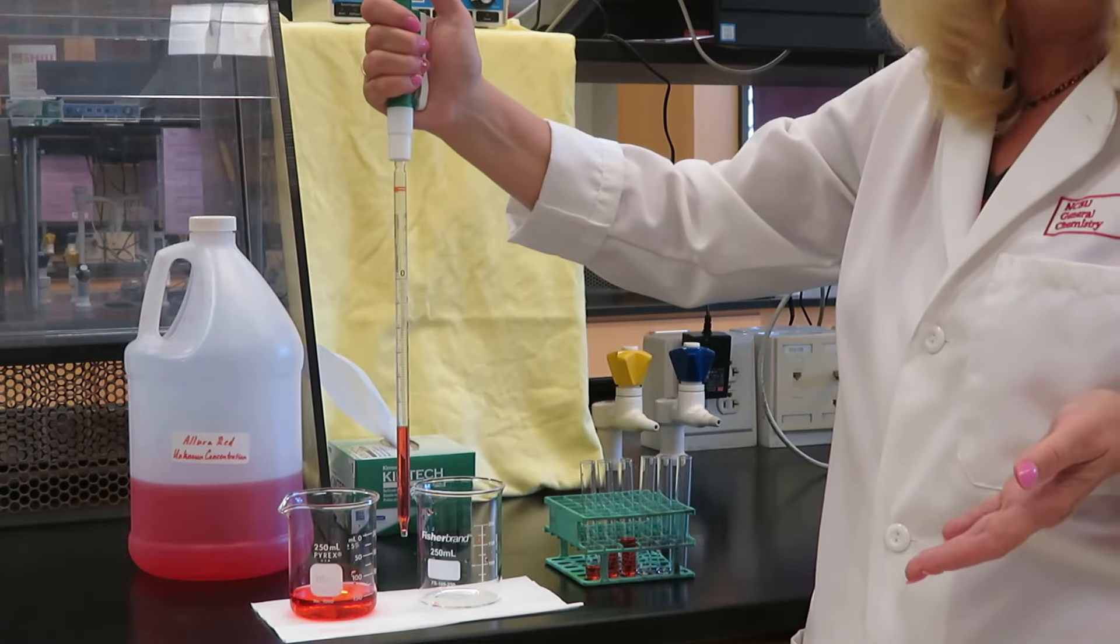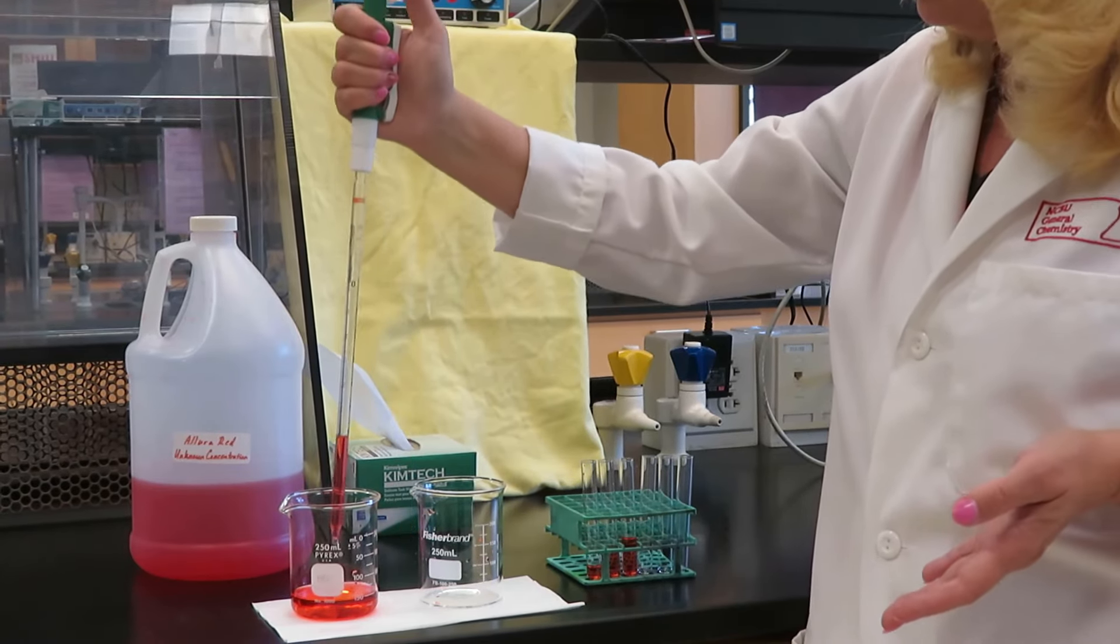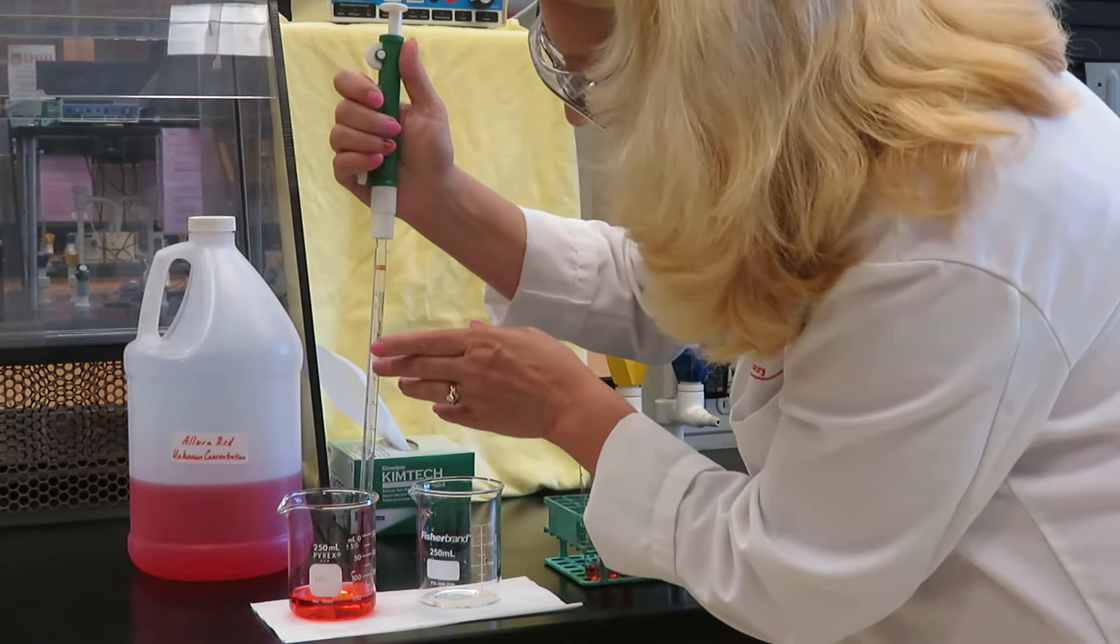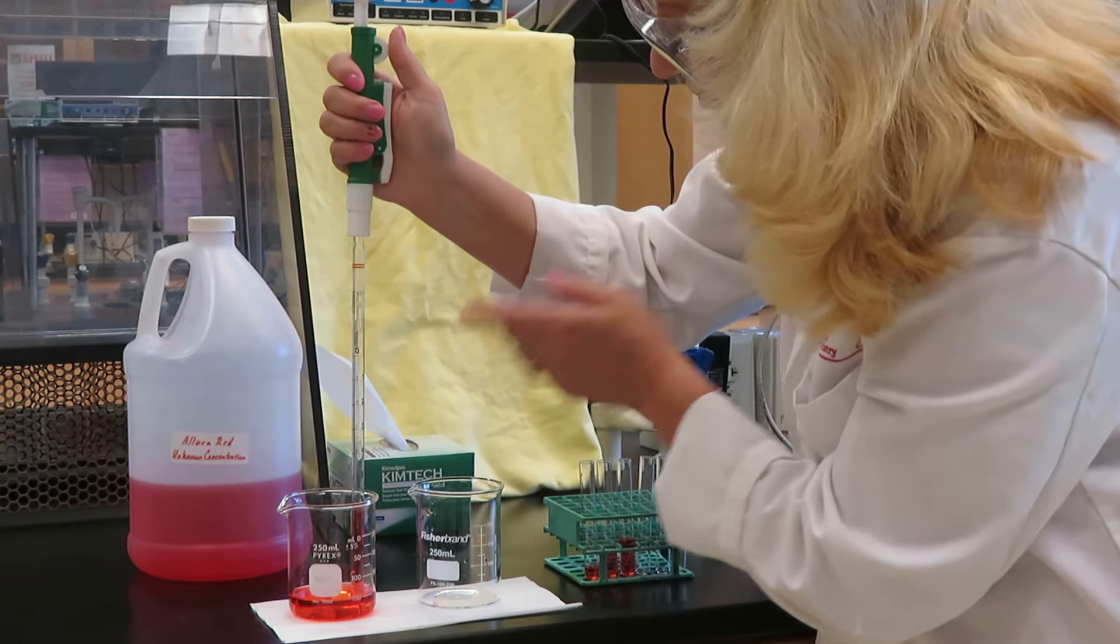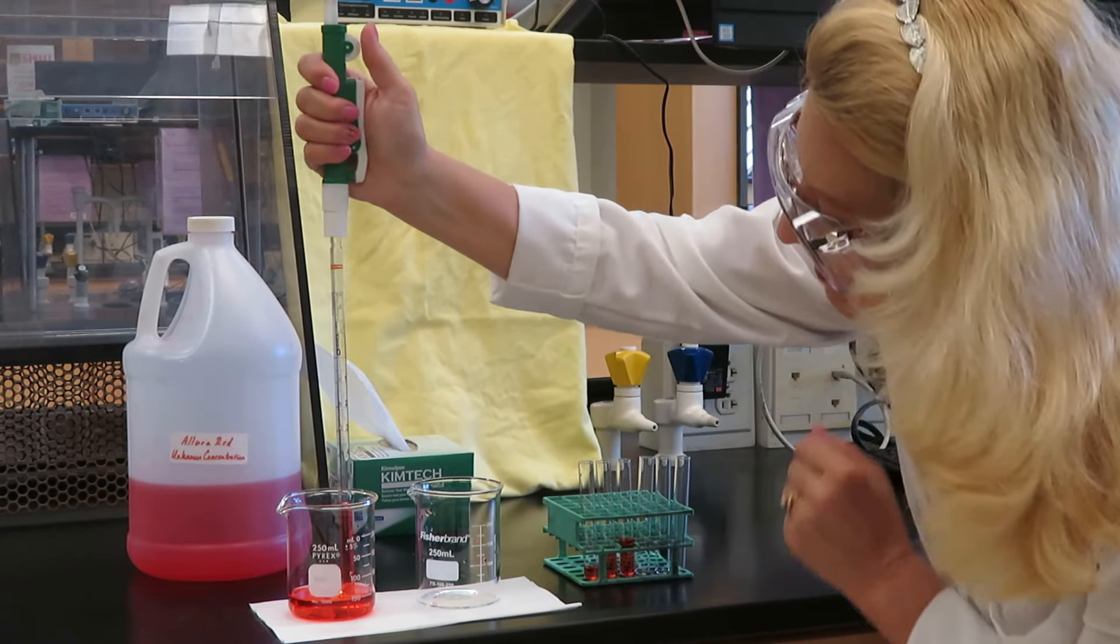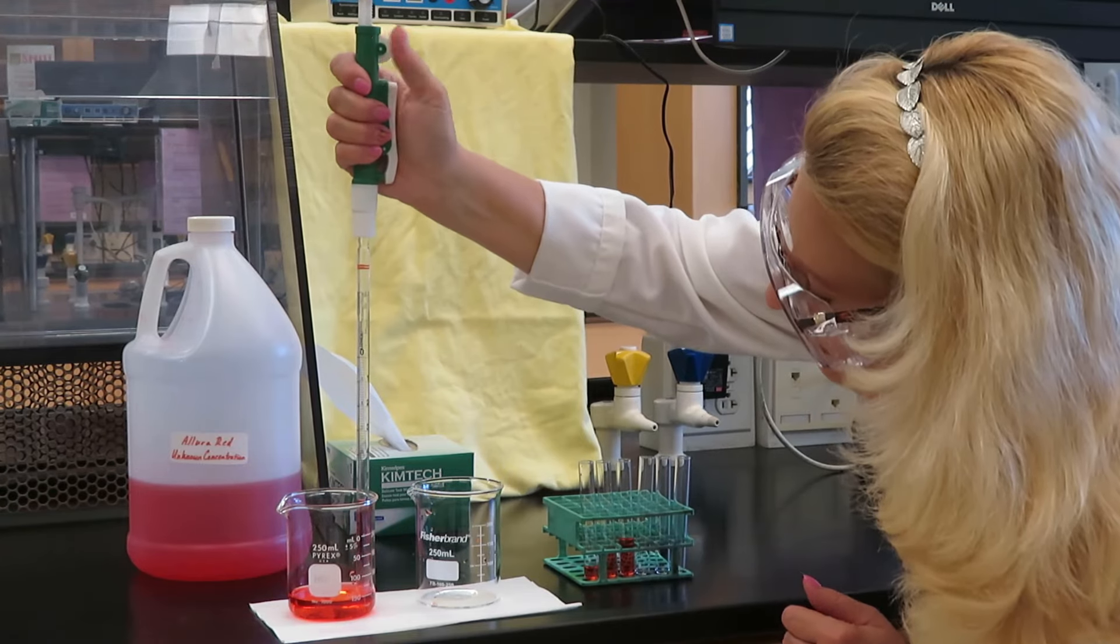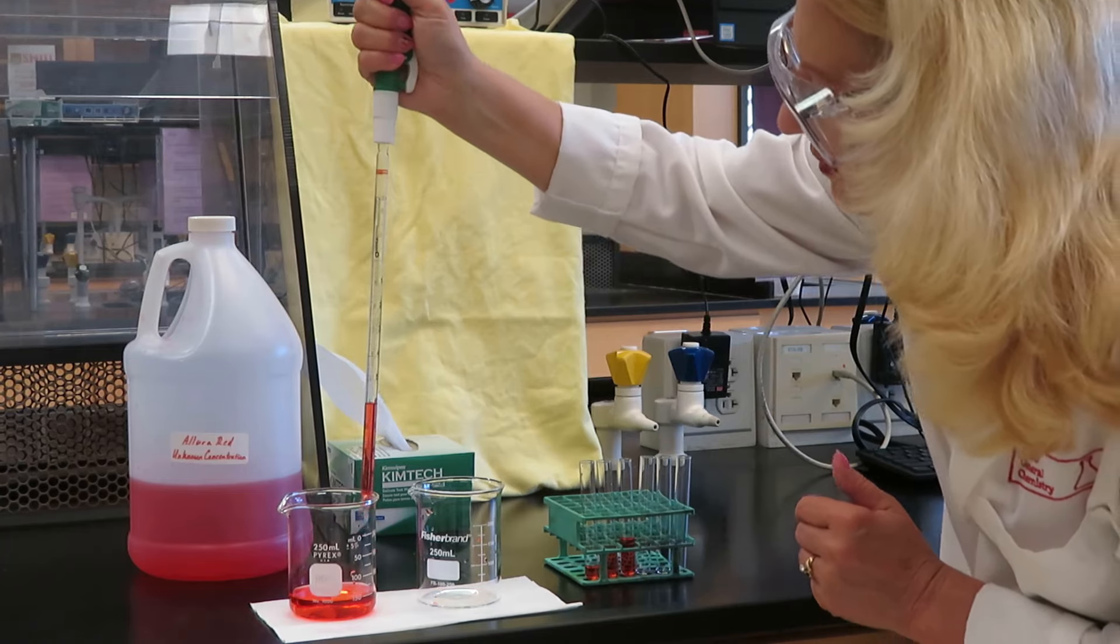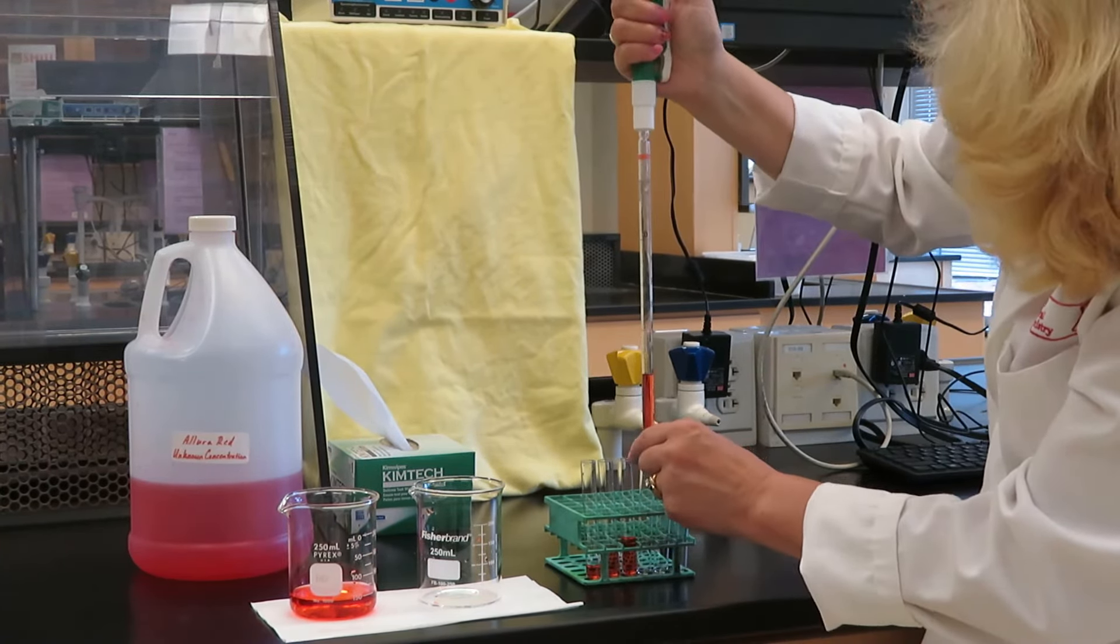Now, let's say in the last test tube, I want 4 milliliters. I'm going to do this one using the graduation on the side, which goes directly at 4 milliliters. So, I'm going to roll downward to draw up my liquid to make sure I am precisely at 4 milliliters at the bottom of the meniscus.